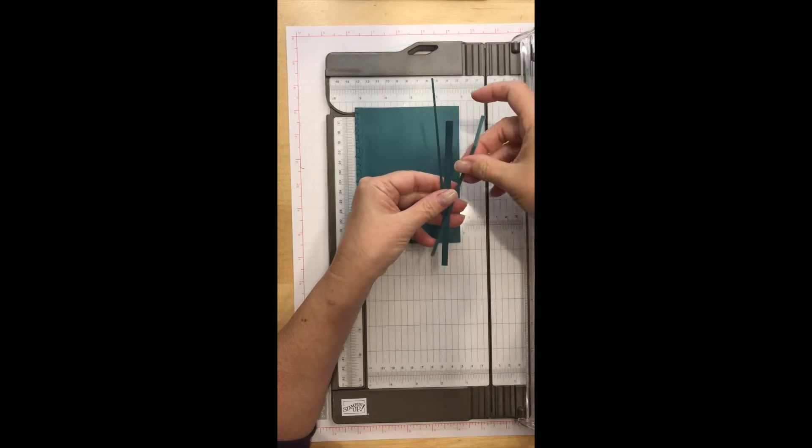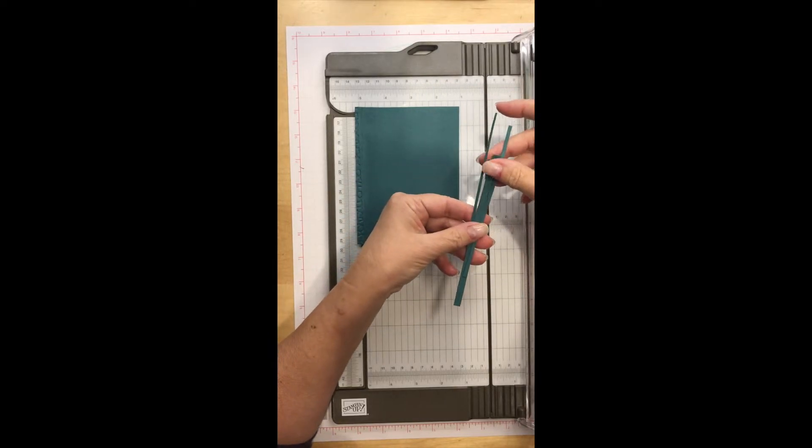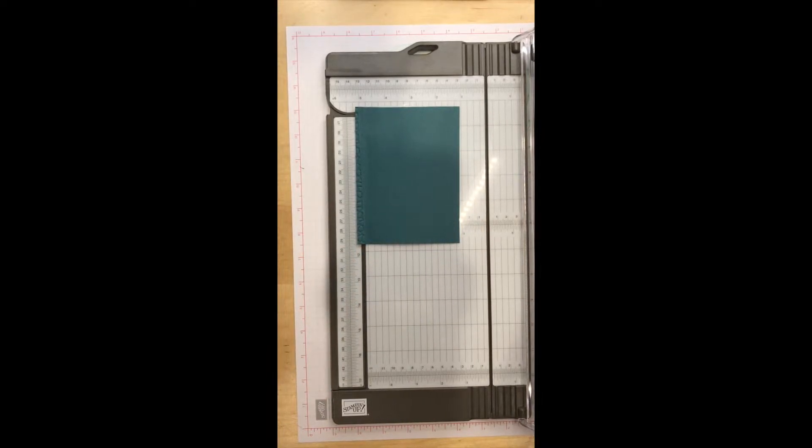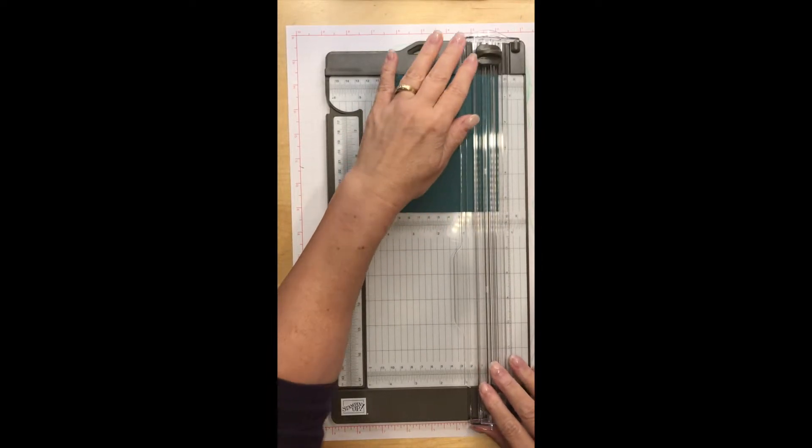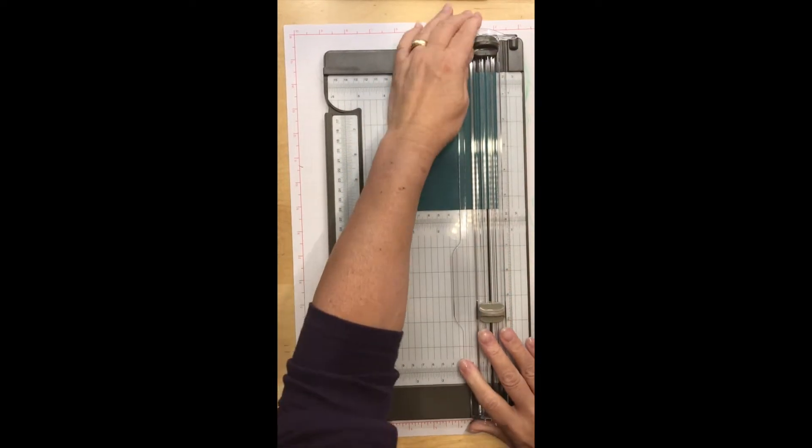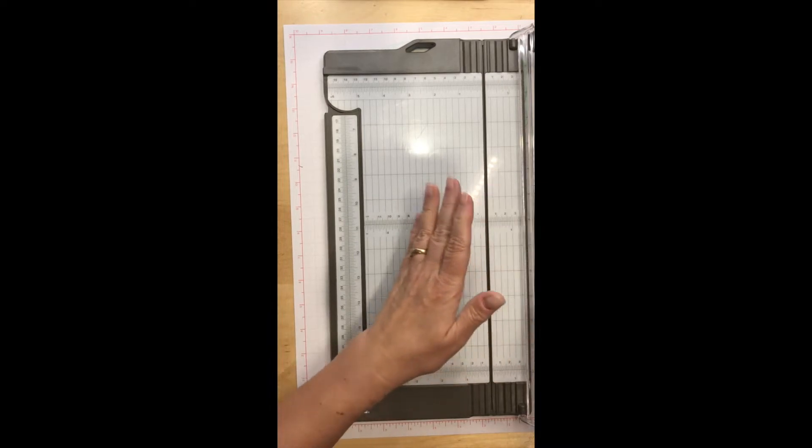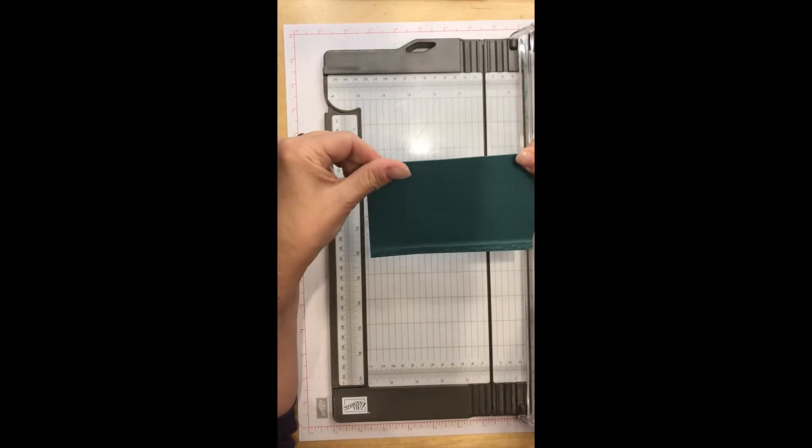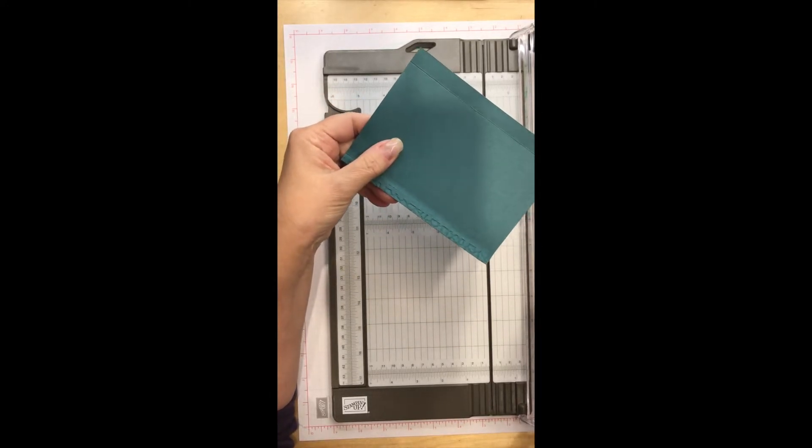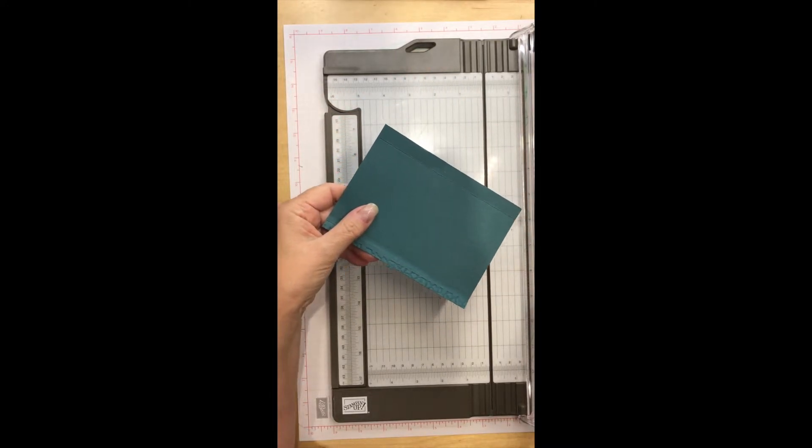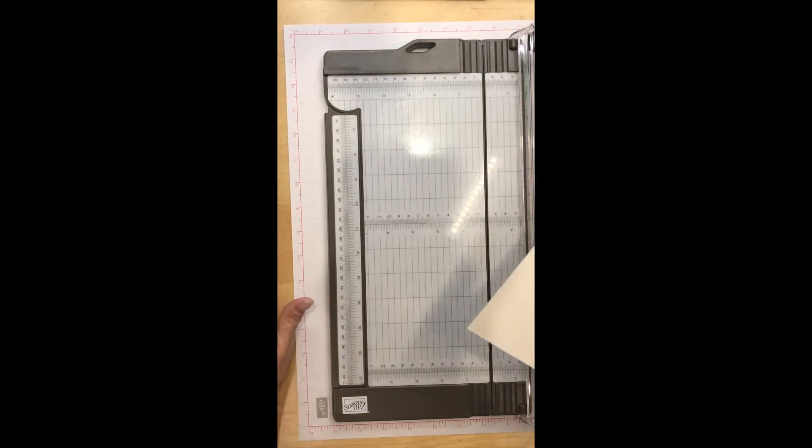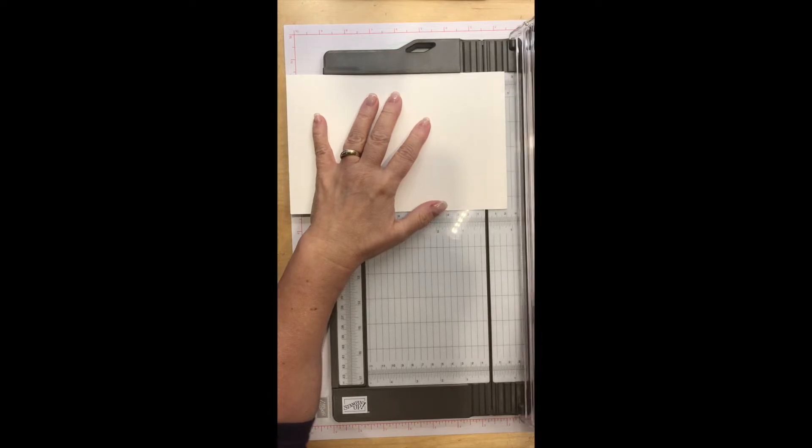The scoring is also amazing. Let me show you that. I'm going to score this piece—it's a one pass. We've got a really nice score line and it's easy to crease. This is our regular cardstock, 80 pound weight. Here's 110 pound weight—let's see how this does. Excellent! No fuzzy edges, nothing. Awesome.